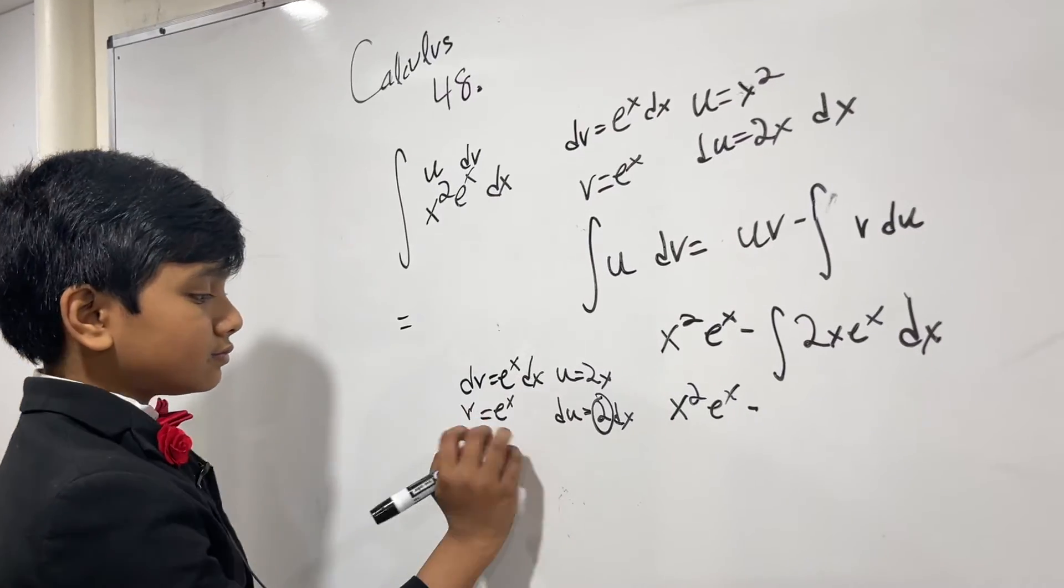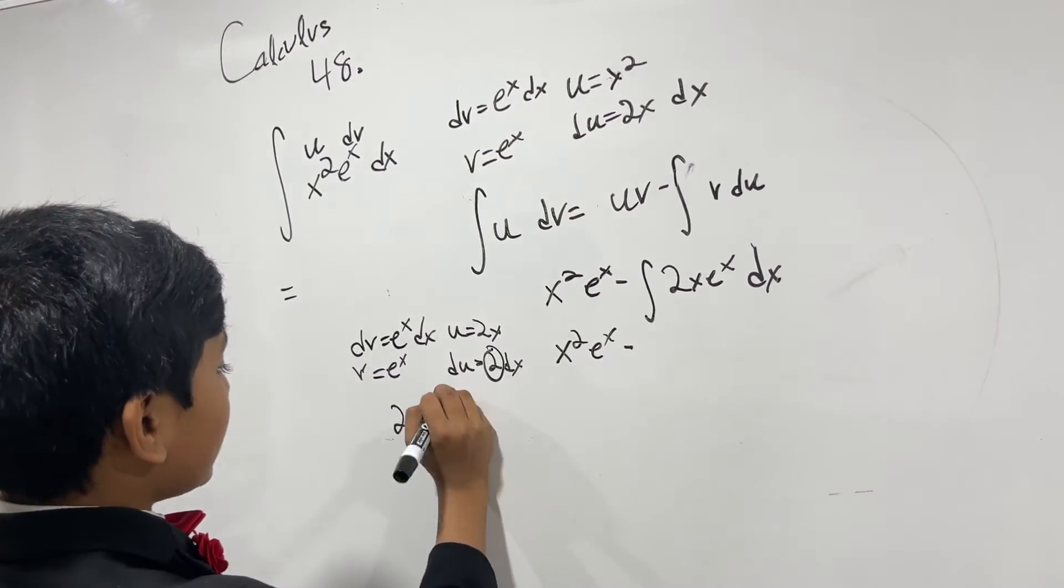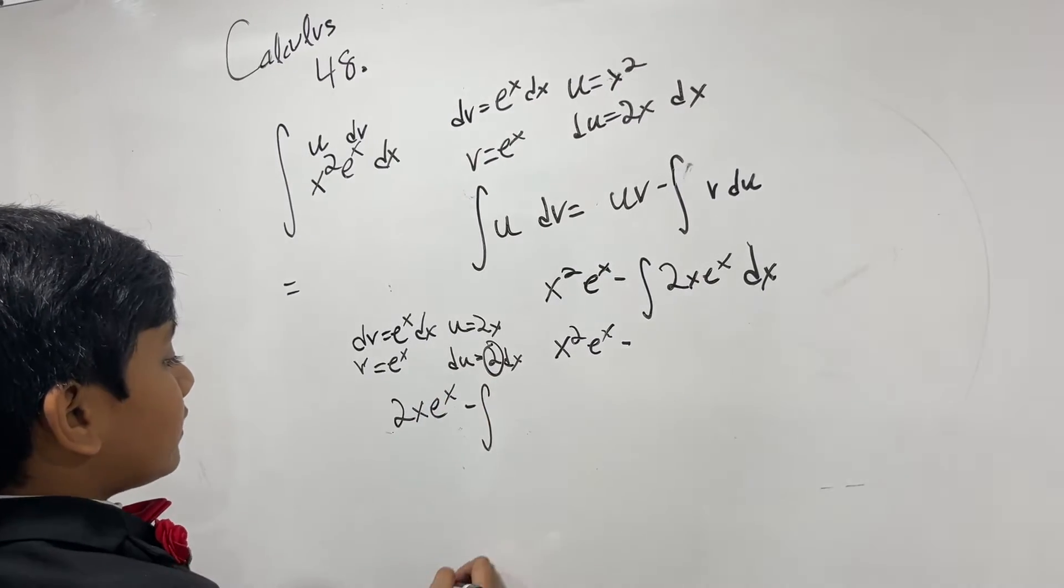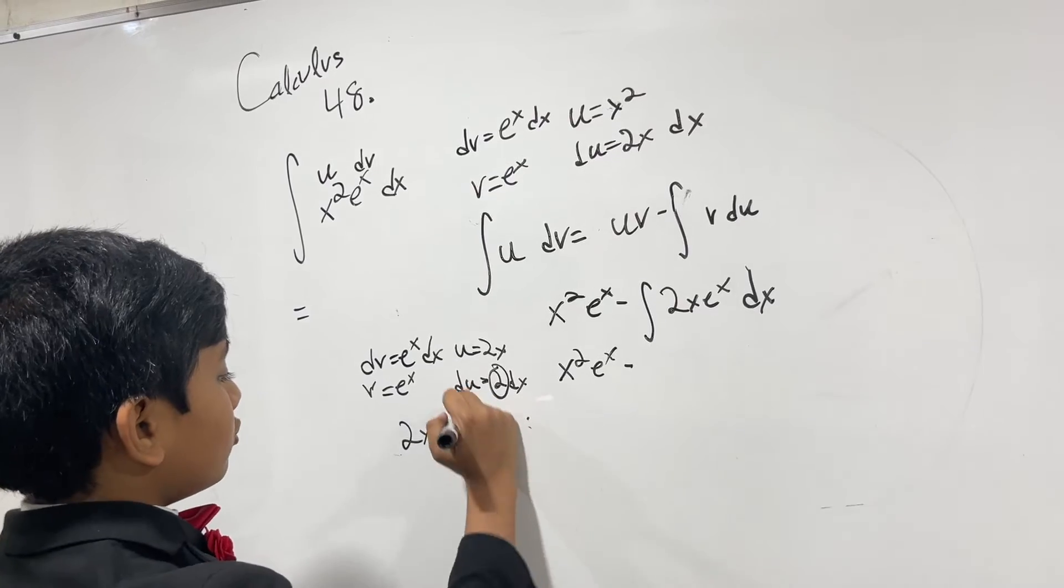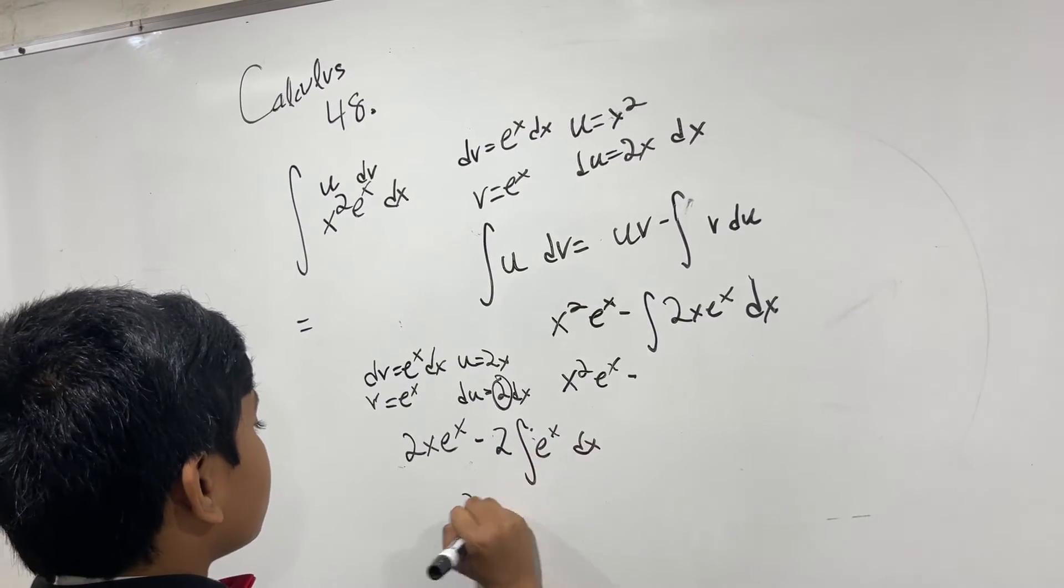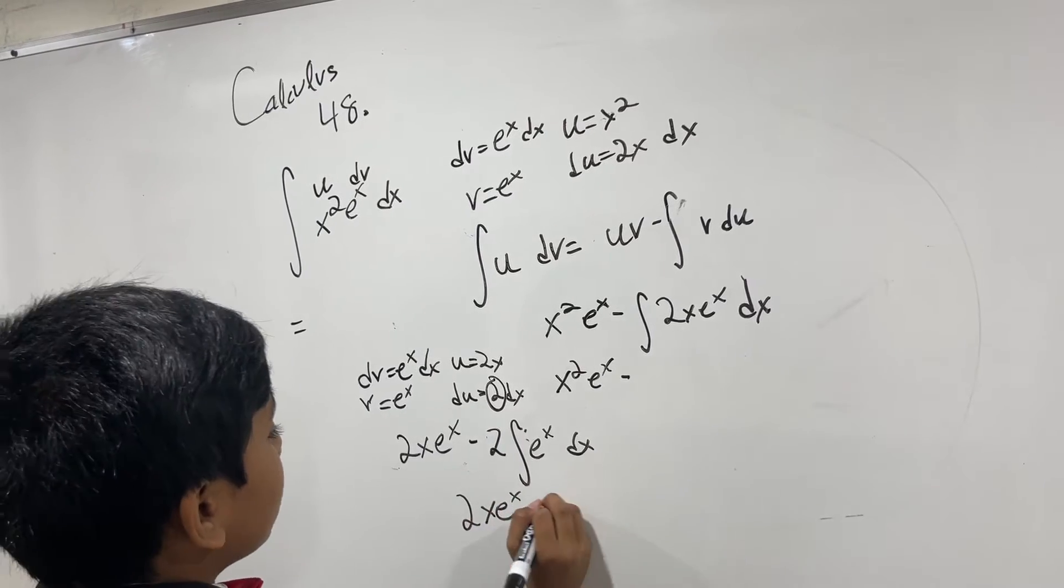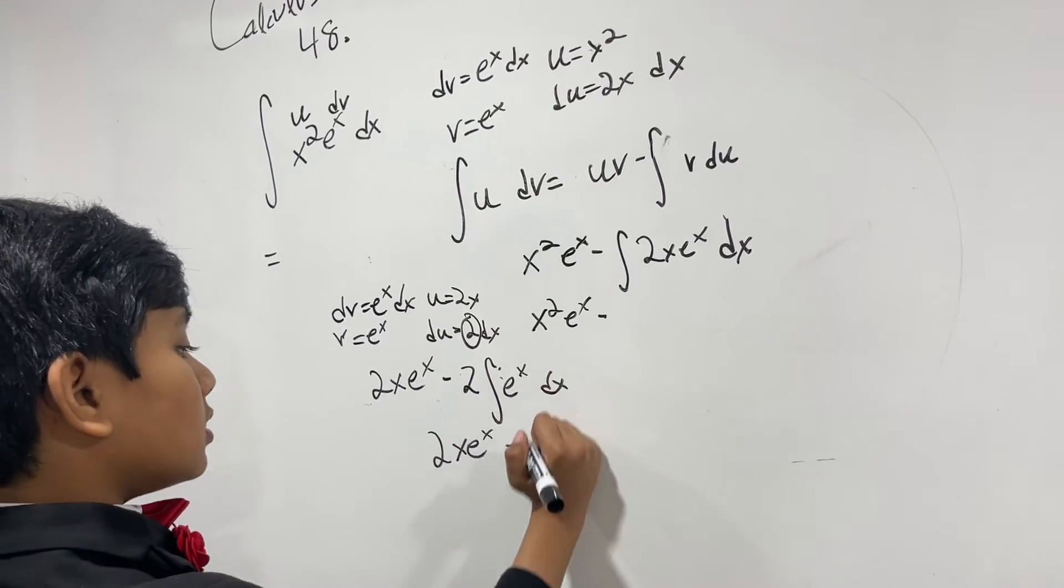So we've got u times v: 2xe^x minus the integral of v du. And we can put the 2, which is a constant, outside. So we've just got 2xe^x minus 2∫e^x dx, or just 2e^x.